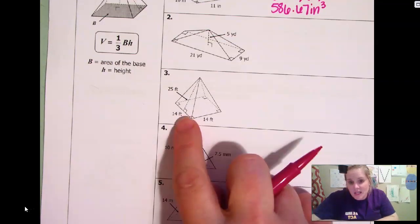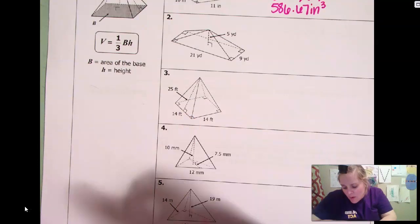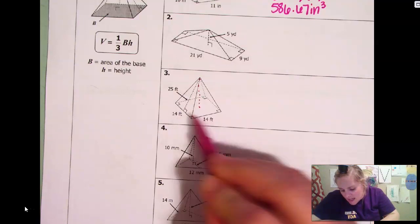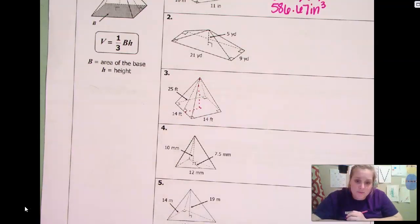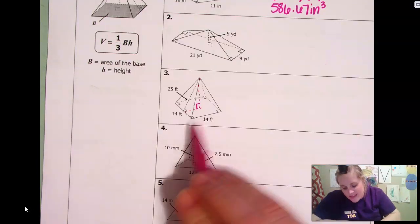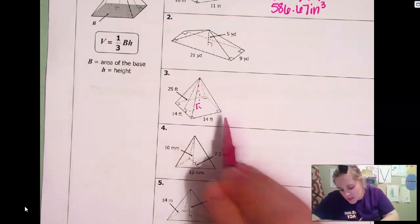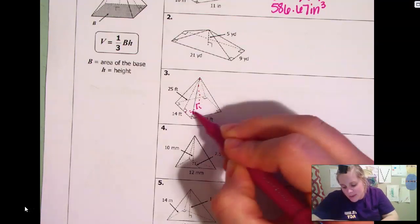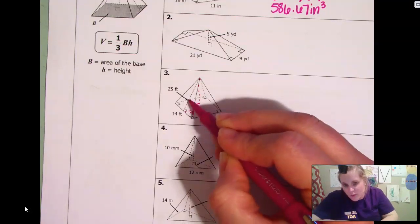They gave us the, isn't that called the lateral height? Okay. But what we're going to do is we're going to find that by creating a right triangle. Okay. That runs through the middle. So if you know that this entire thing is 14, then half of that would be seven.